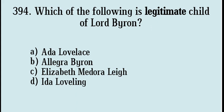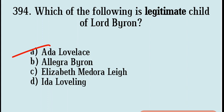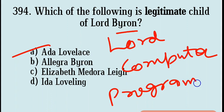Next question: Which of the following is the legitimate child of Lord Byron? Options are Ada Lovelace, Allegra Byron, Elisabeth Medora Leigh, Ada Lovelace. Correct answer: Option A, Ada Lovelace. Ada Lovelace was the daughter of Lord Byron. She is known as the world's first computer programmer.